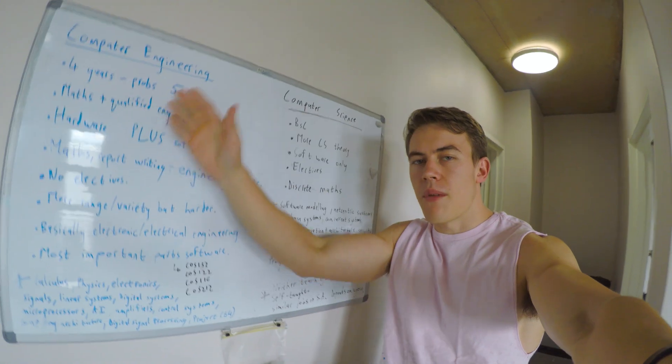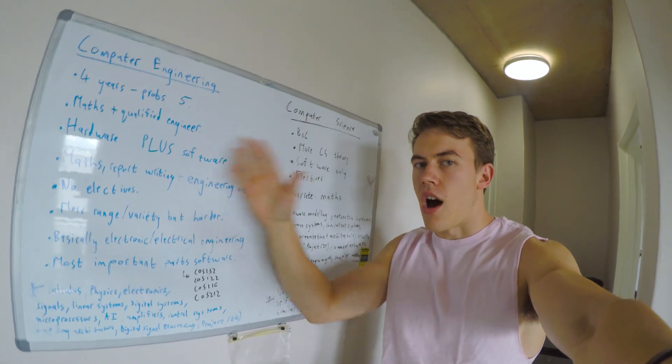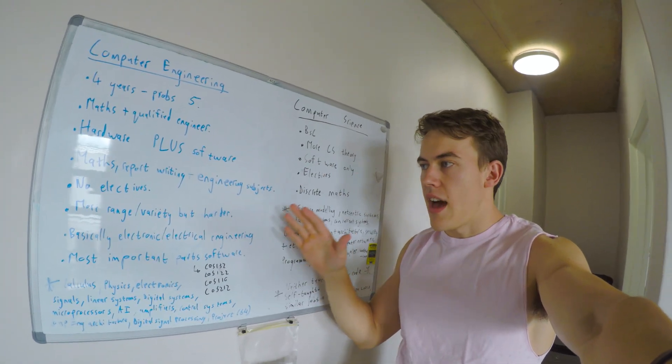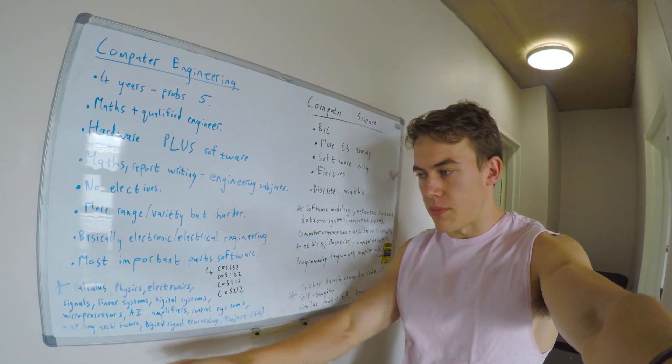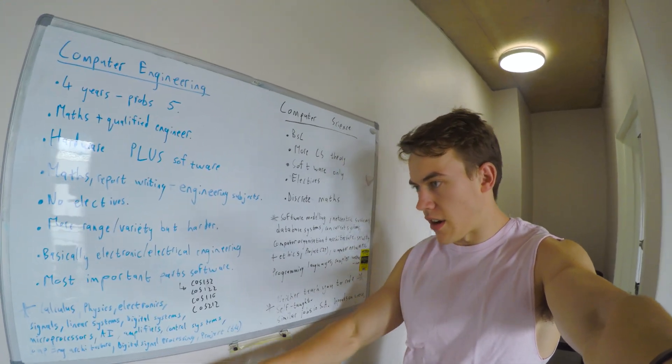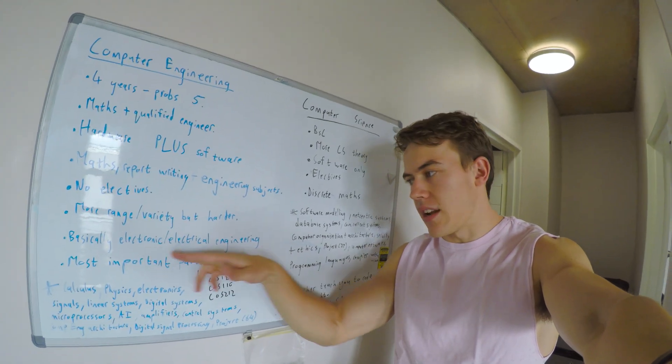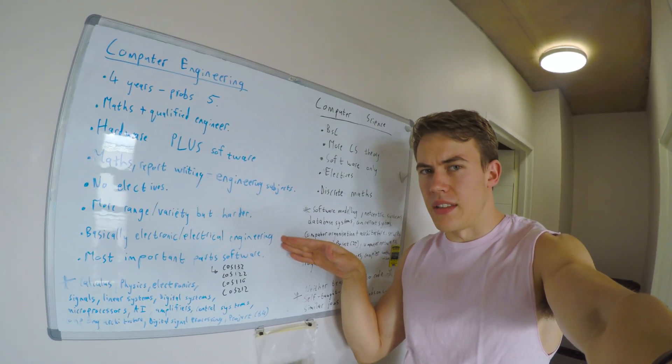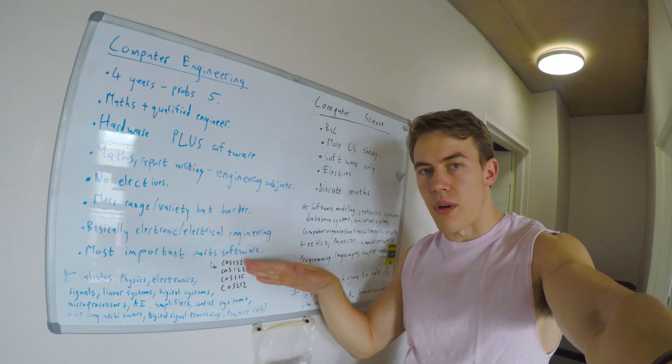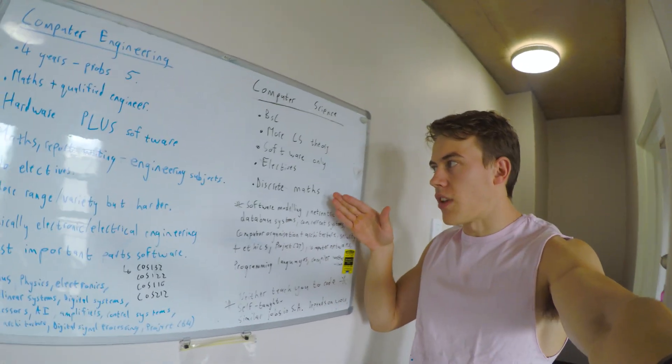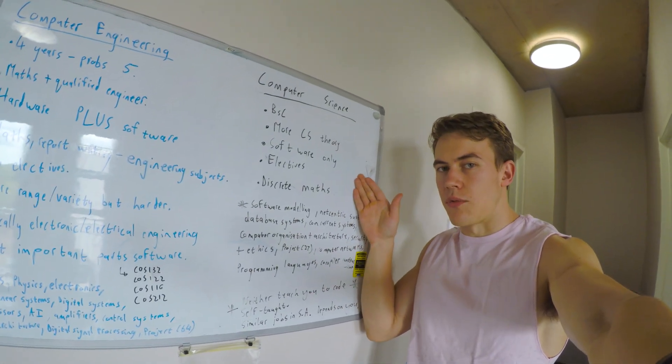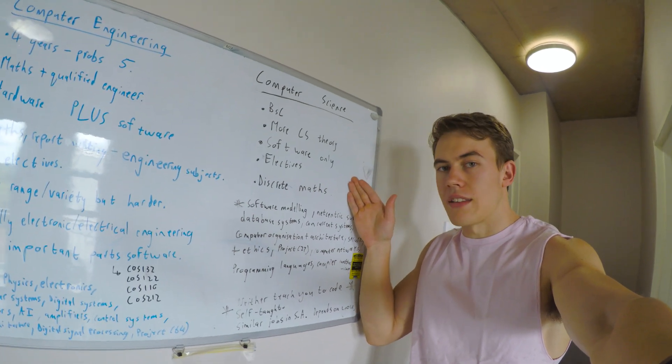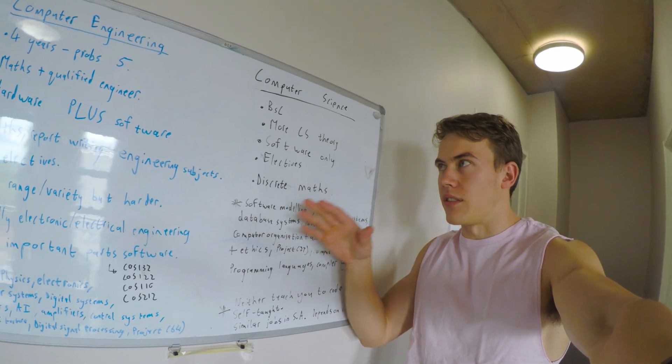Computer engineering has a far bigger focus on maths, hardware, electronics, electrical systems, microprocessors, and computer architecture. It's basically electronic and electrical engineering, obviously a little bit easier, plus the most important parts of software. Whereas computer science is just software and doesn't have so much of the other things involved in it.